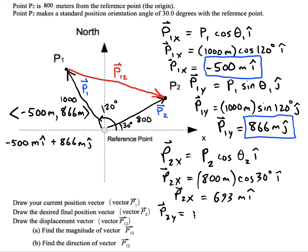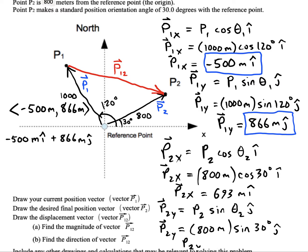So we'll have P2x equals 693. And P2y is 400. Now I have everything I need for vector 2. So let's put it together into its components. I'm gonna put that right here, 693 comma 400.